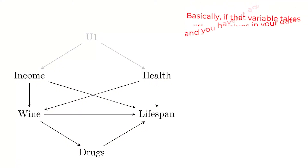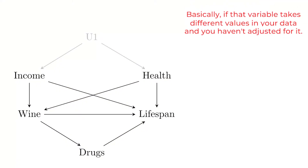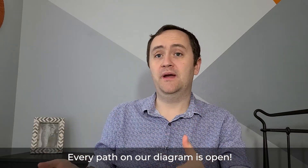We want to isolate just the good paths. One more set of terminology: open and closed. An open path is a pathway along which all variables on the path are allowed to vary in your sample. For example, on the wine and lifespan graph, if we have data with some people who drink more wine, some less, some healthier, some less healthy, some who live longer — there's variation in all those variables, so that pathway is open.